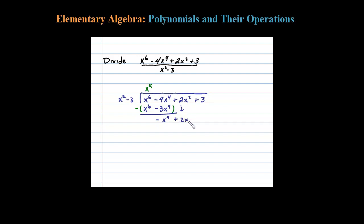What times X squared is X to the fourth? Let's try negative X squared. Negative X squared times X squared is negative X to the fourth. You want to line that up perfectly. Negative X squared times negative 3 is plus 3X squared.